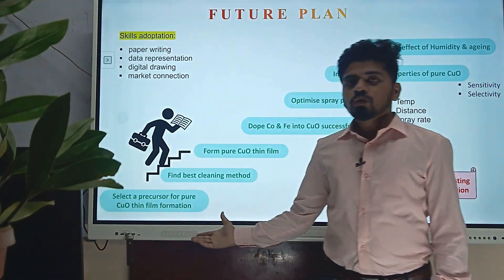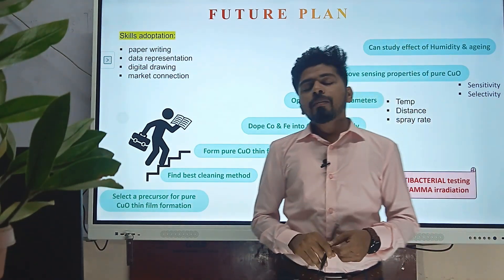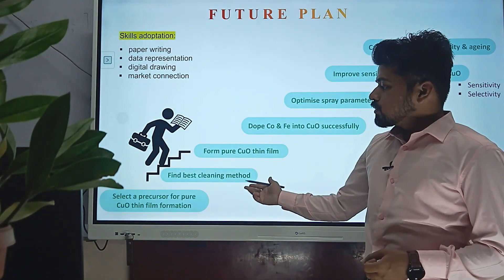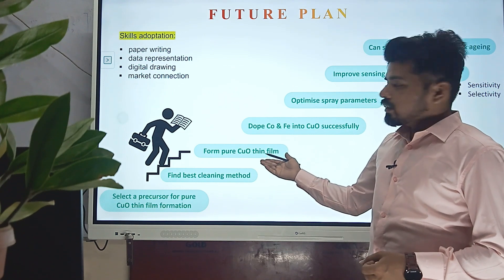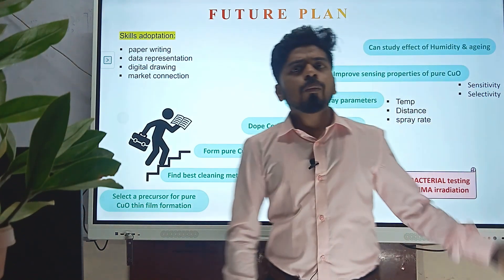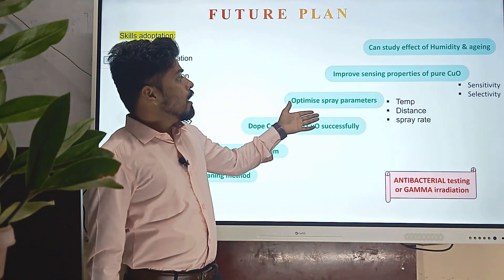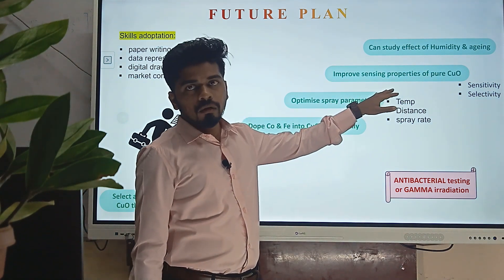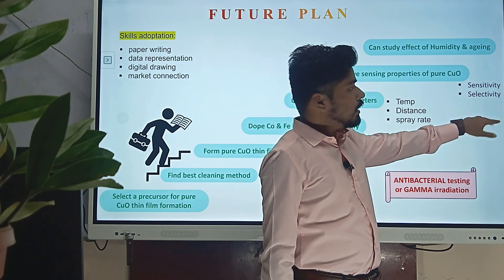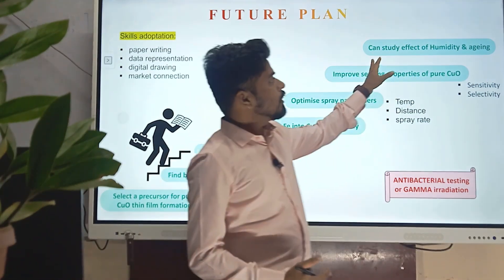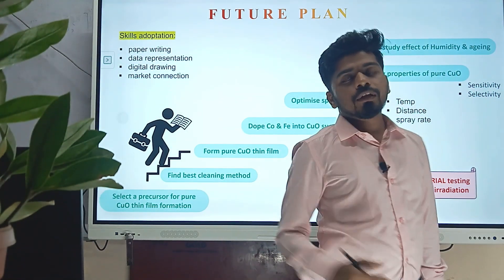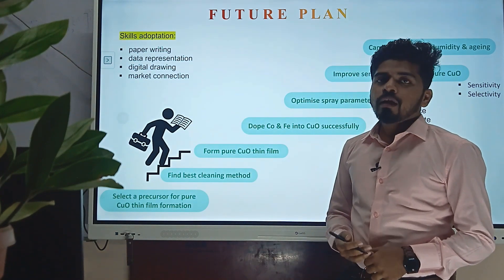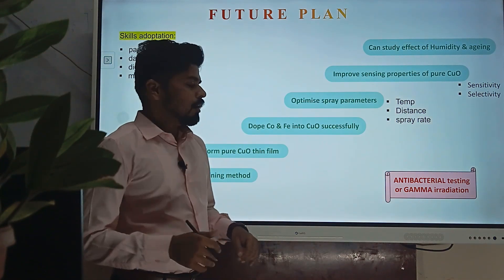My future plan is to first choose a precursor solution for pure copper oxide — I will use copper acetate solution to make pure copper oxide thin films — then choose the best cleaning method, form a pure thin film, dope cobalt and iron into it, optimize spray parameters like temperature, distance, and spray rate, and improve the sensing performance of pure copper oxide films in terms of selectivity and sensitivity. Further, I will study the effect of humidity and aging on the thin films. I also plan to develop personal skills: paper writing, data representation, digital drawing, and market connections.